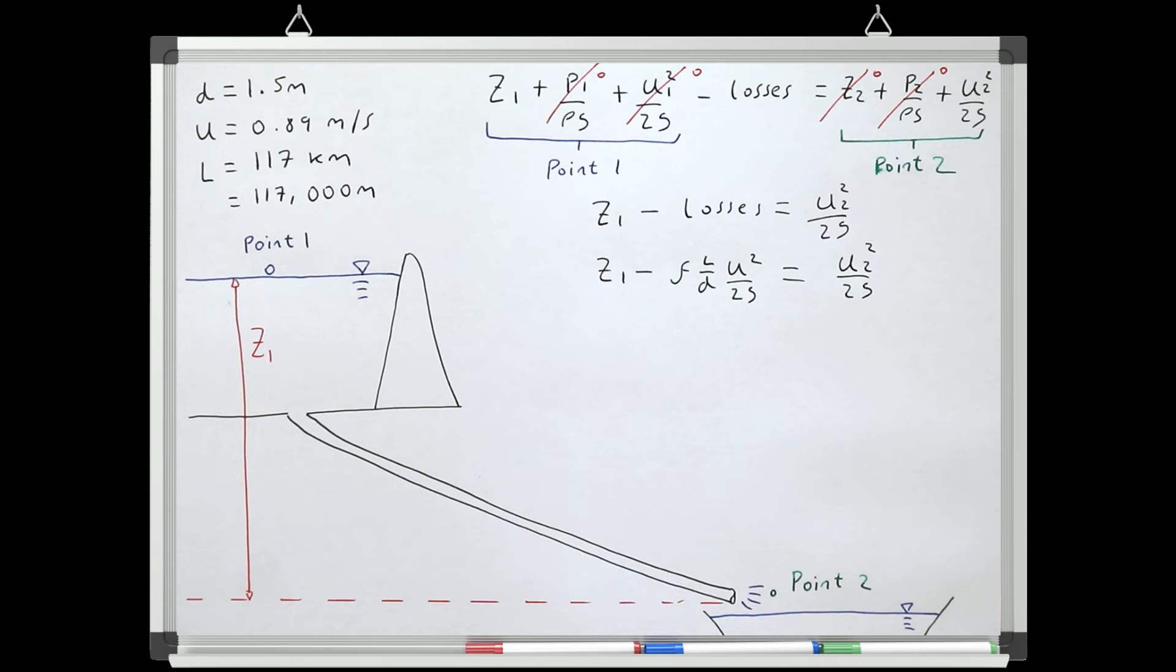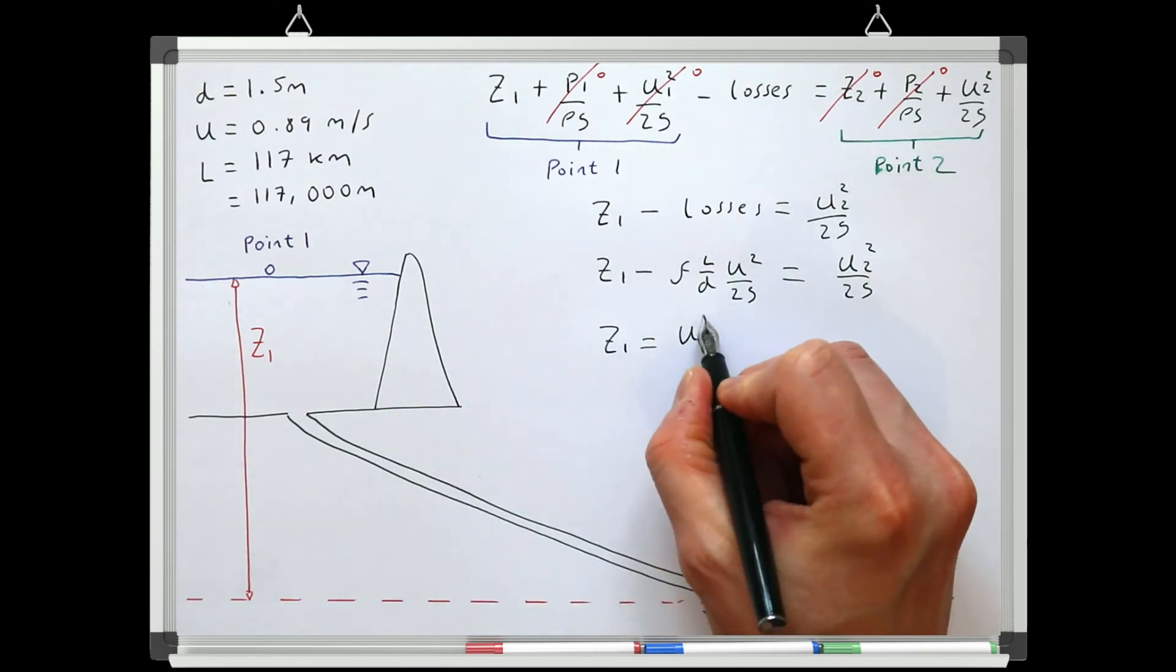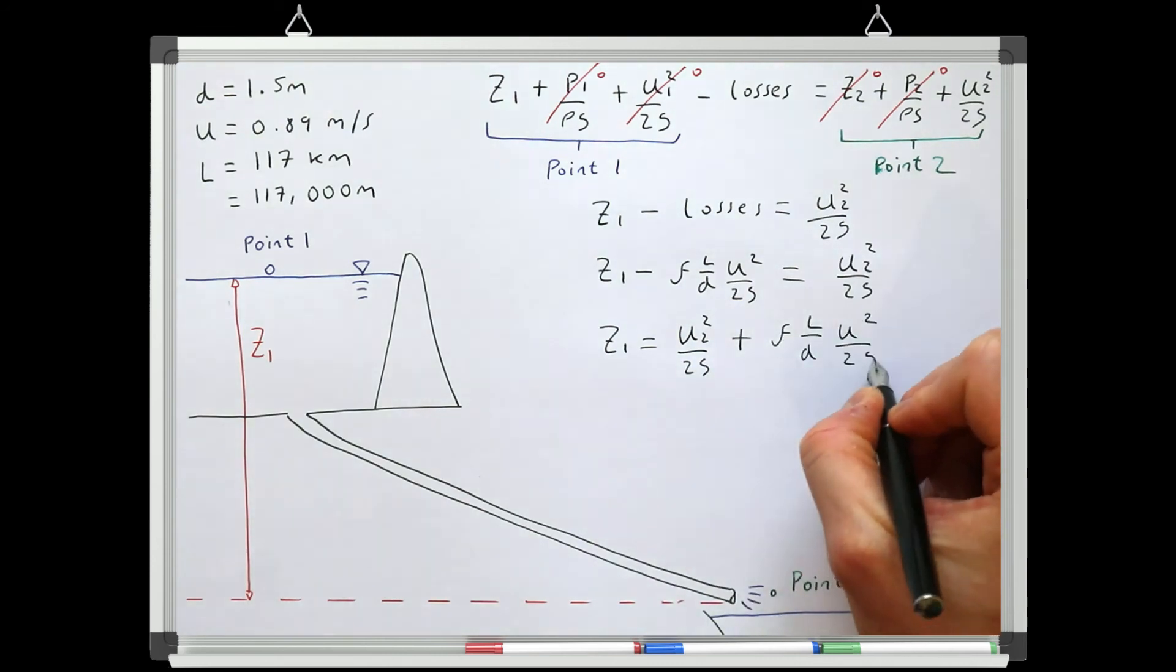To find the elevation at 0.1, we can just rearrange the equation for z1. So we have the velocity of water in the flow. We know the pipe's diameter and the pipe's length, but we need to be able to estimate the friction factor to solve this equation. We can estimate the friction factor using the Moody diagram and the procedure that we described in Lesson 3, Part 3.